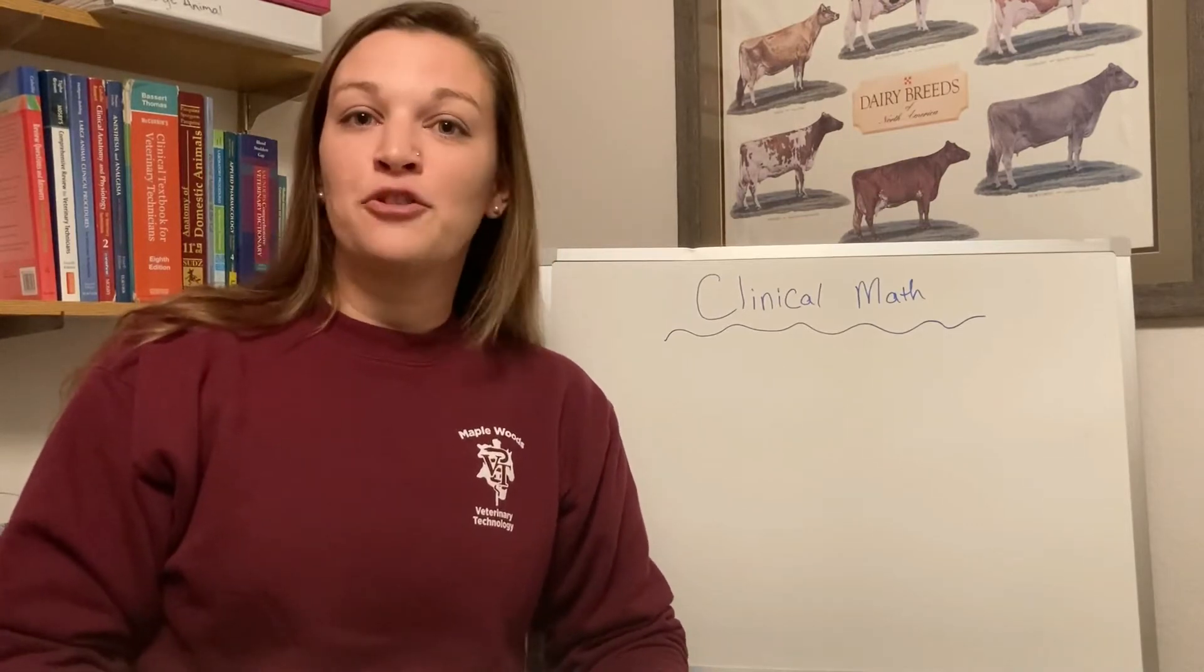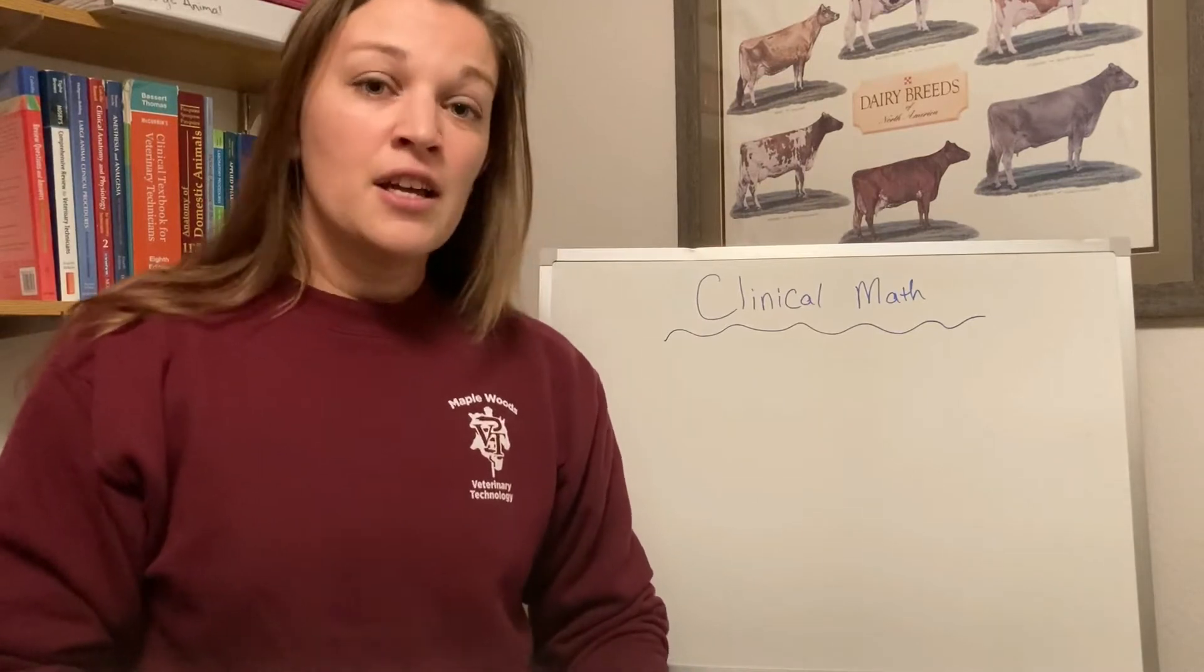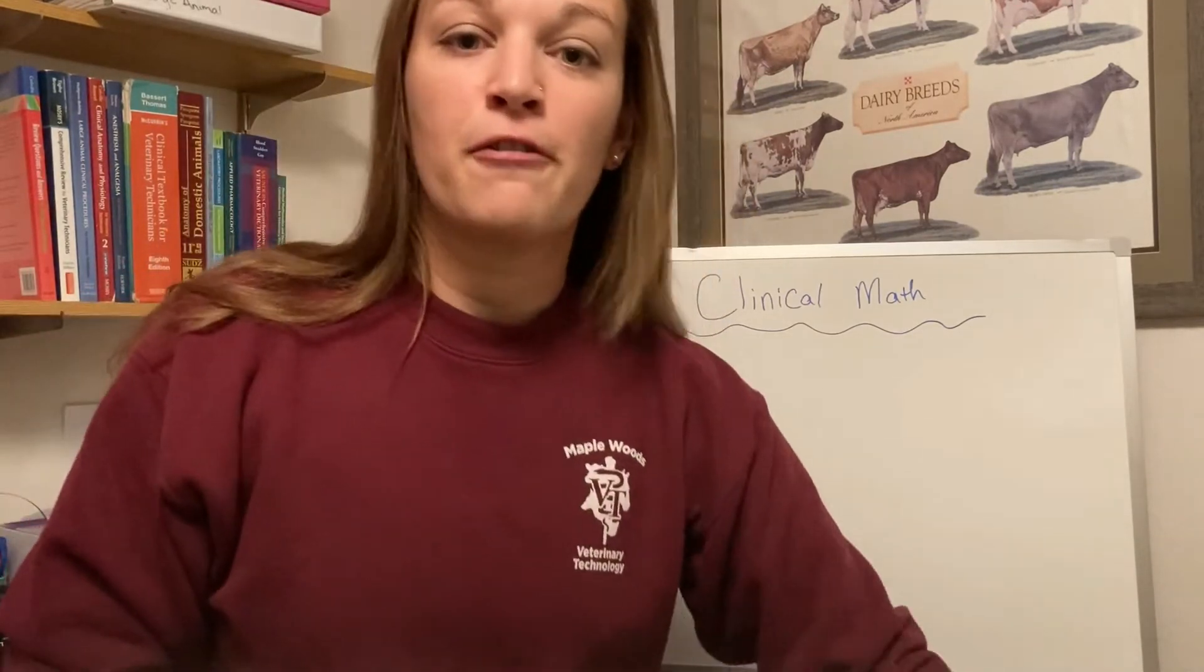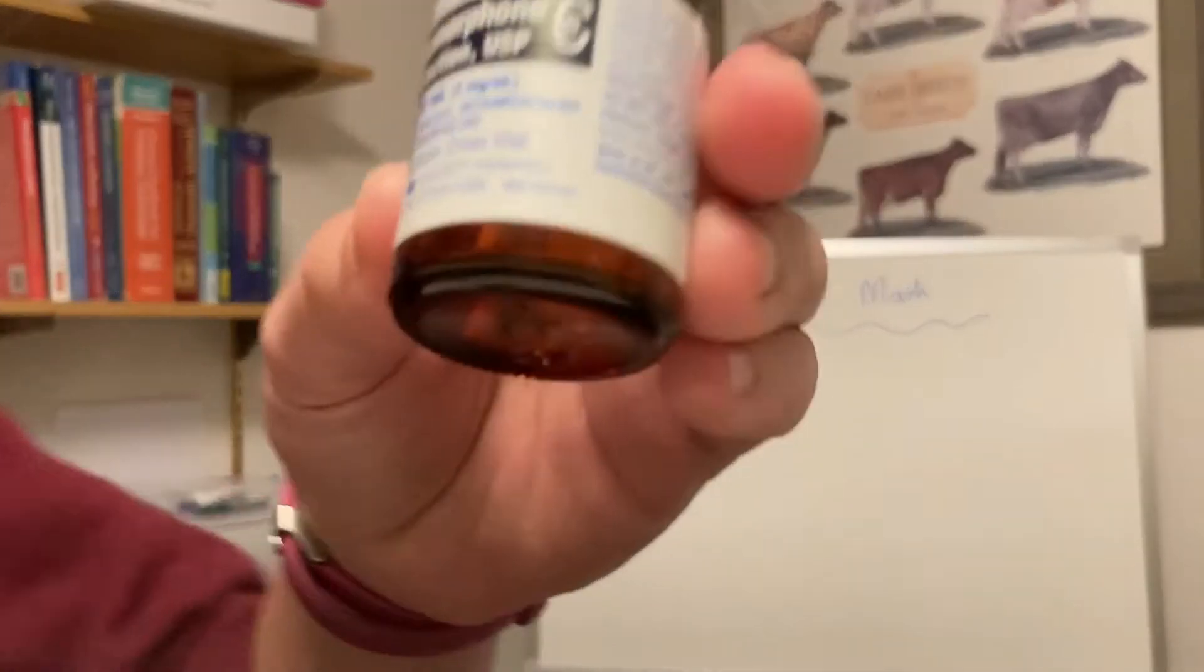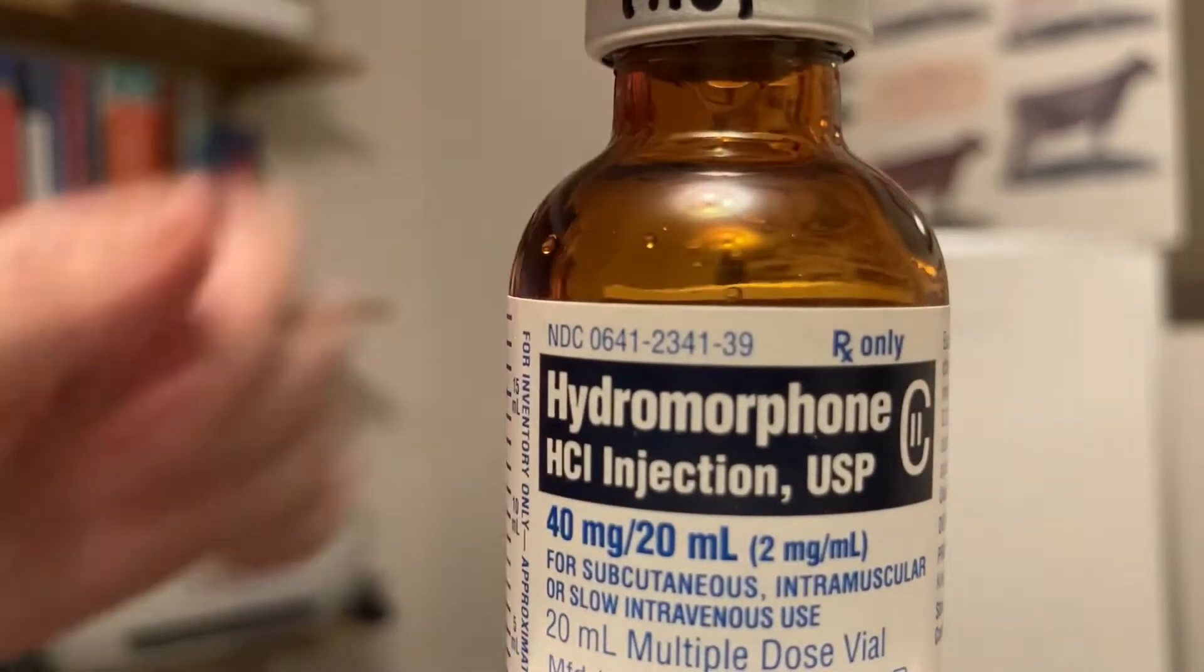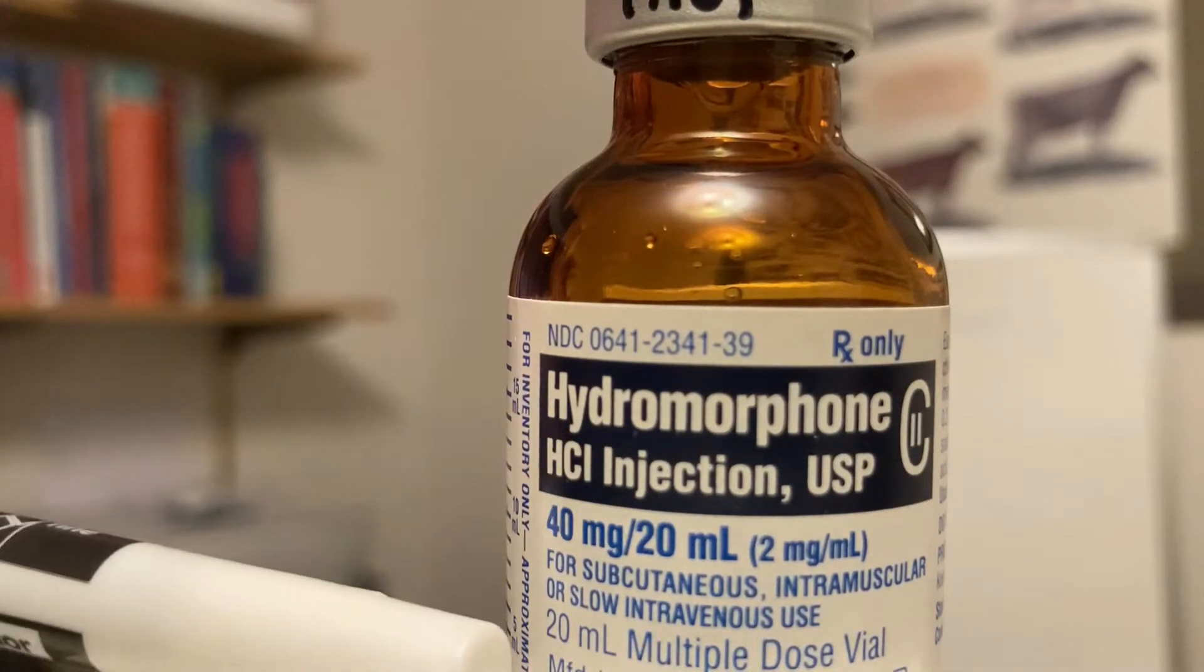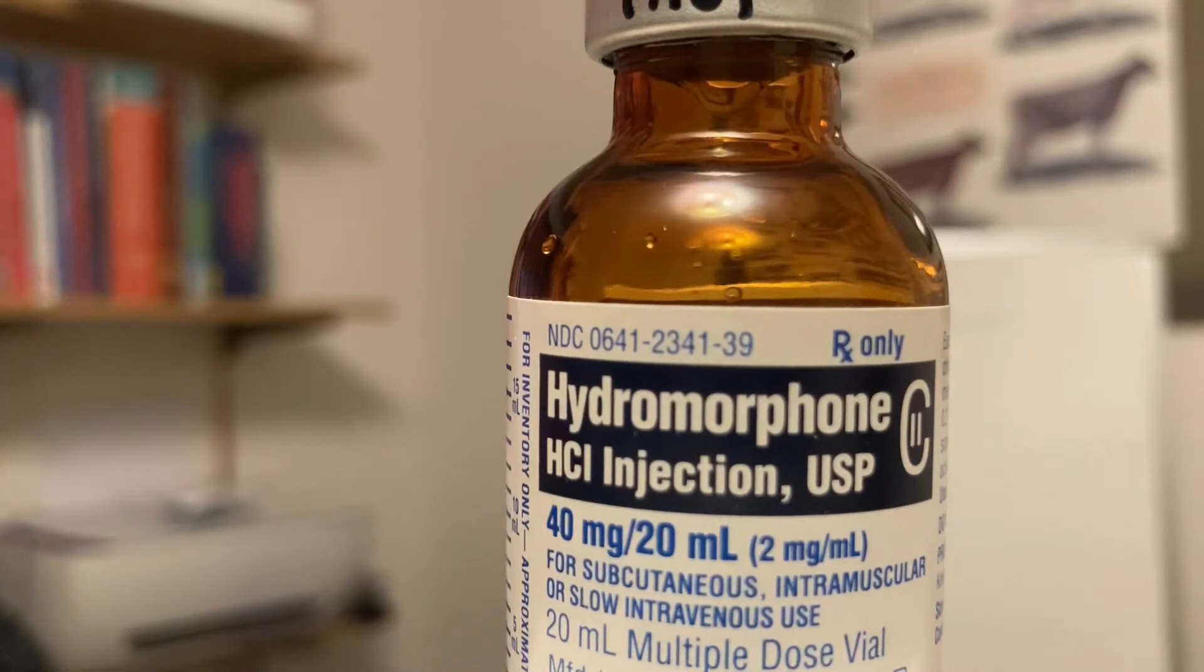The first one we'll talk about is hydromorphone. It's one that's commonly used around general anesthesia, so I'll pop my example bottle up here for you to take a look at the label. If we take a look at this label here, don't get confused by the 40 mg per 20 mL and then in parentheses 2 mg per mL. This is actually a 20 mL multiple dose vial, so there's 20 total mLs in this bottle.